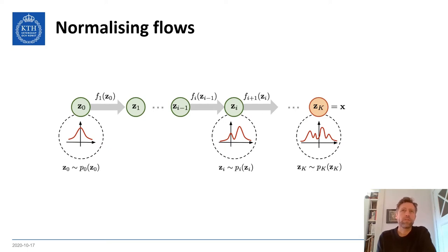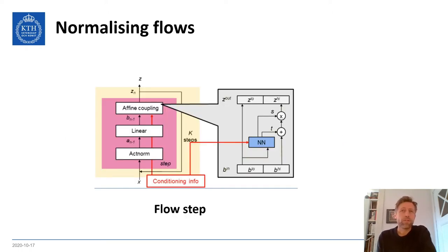And during synthesis, new outputs are generated by transforming samples drawn from this latent distribution. And I just want to mention that the conditioning information in our model is fed into the neural network in the affine coupling layer of each flow step.